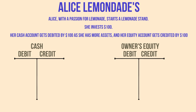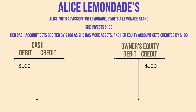Now let's bring this idea to life through the tales of two friends, Alice and Bob. Alice, with a passion for lemonade, starts a lemonade stand and invests $100. In the accounting world, her cash account gets debited by $100 as she has more assets, and her equity account gets credited by $100.